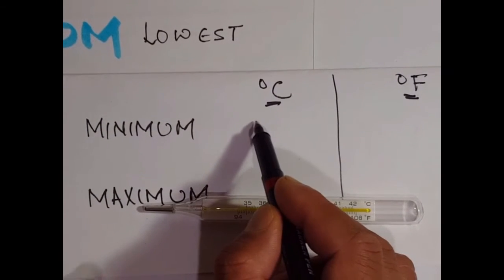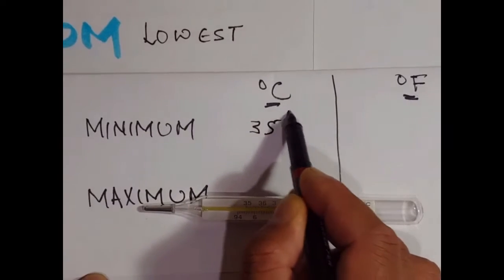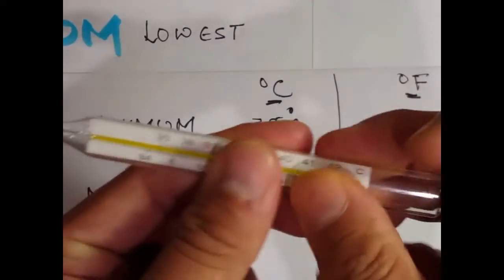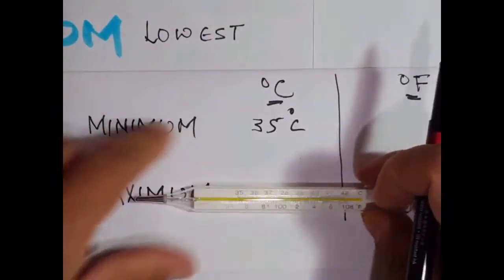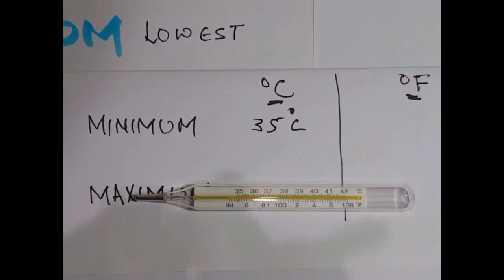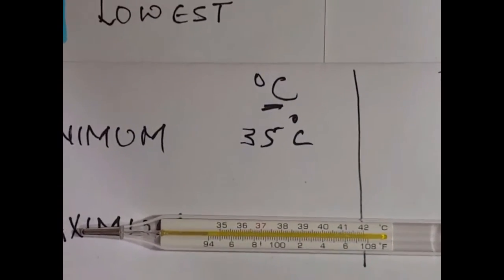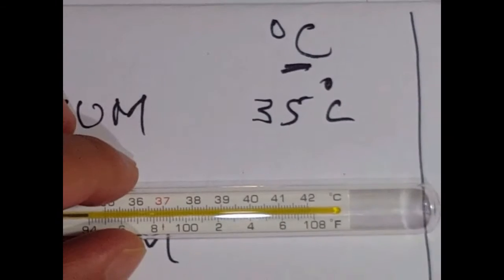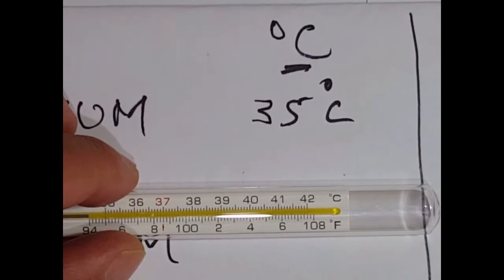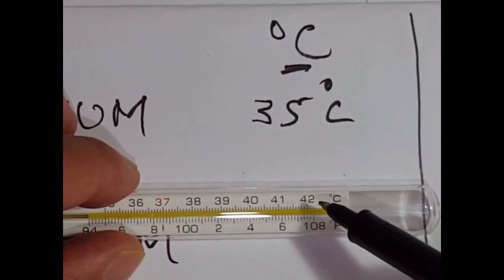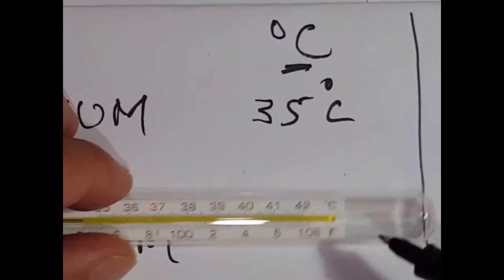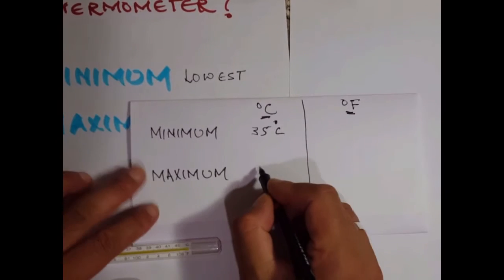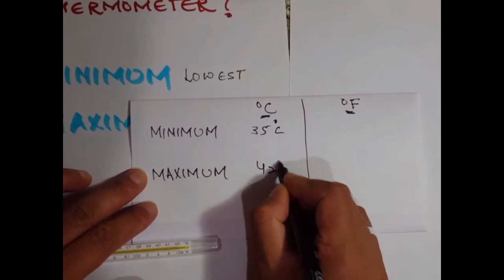So the minimum it can measure is 35 degrees Celsius. And what is the maximum temperature it can measure? Let me zoom in closer — here it is, 42 degrees Celsius. If you look carefully, it is 42 and the unit is degree Celsius. So the maximum temperature that this thermometer can measure in Celsius is 42 degrees Celsius.